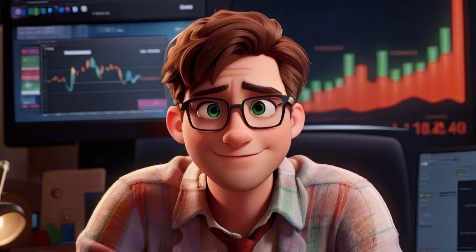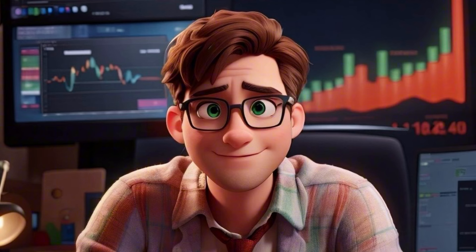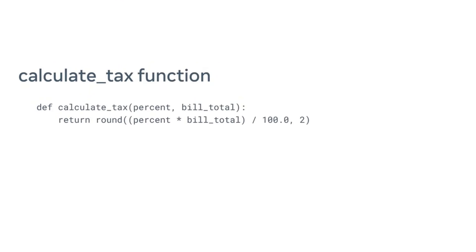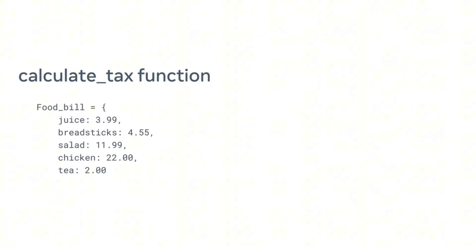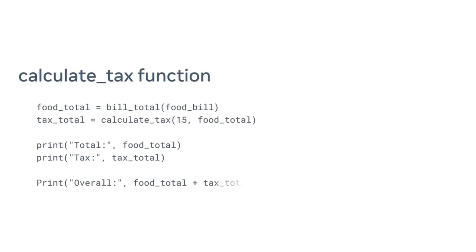Let's examine another example — this time for calculating the total of a bill and adding tax to it. The code will be presented in four sections. First, the bill total function accepts a bill as a parameter and loops through it to calculate and return the total. The calculate tax function accepts two parameters, the percentage and the bill total, and returns the total tax rounded to two decimal places. The food bill represents a customer's bill which is static but could also accept dynamic user input. The last few sections call the two functions to calculate the bill and tax and print each along with the overall total.